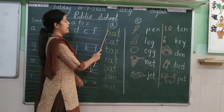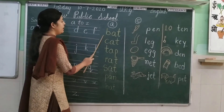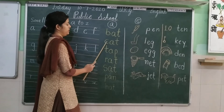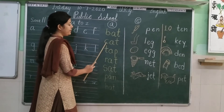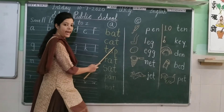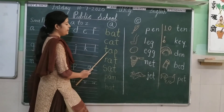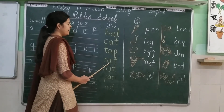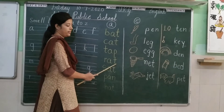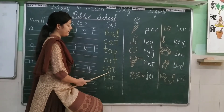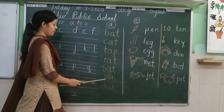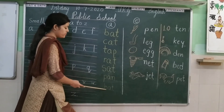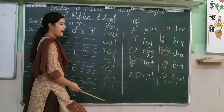Now we will start the sound of A. B-A-T, bat. C-A-T, cat. C-A-T, cat. R-A-T, rat. S-A-T, sat. C-A-N, can. H-A-T, hat.